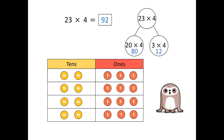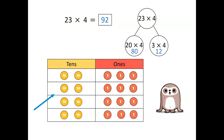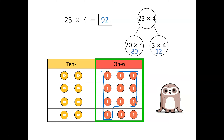Let's have a look at the place value grid — I see something interesting about the tens and ones. We have just calculated that twenty-three multiplied by four is equal to ninety-two, but I don't see nine tens, I only see eight. Can you think why that might be the case? Let's look at the ones — there are twelve. We know from place value that we can only have up to nine in the ones place, so we need to exchange ten of those ones for a ten. Hence we have ninety-two: nine tens and two ones.